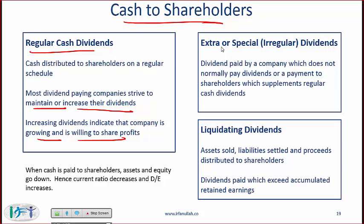Another way companies can pay dividends is an extra or special dividend, also called an irregular dividend. This is paid by a company which does not normally pay dividends, or it supplements regular cash dividends. For example, a company might normally pay 50 cents per share, but if it has excess cash it can distribute an extra or special dividend. The benefit is that it does not set an expectation, giving the company flexibility in the future as to how much dividend to pay.